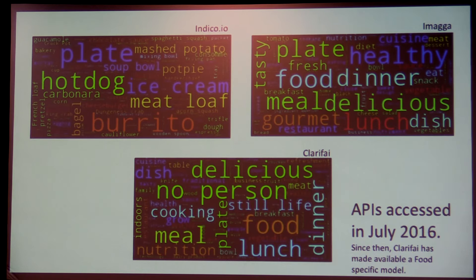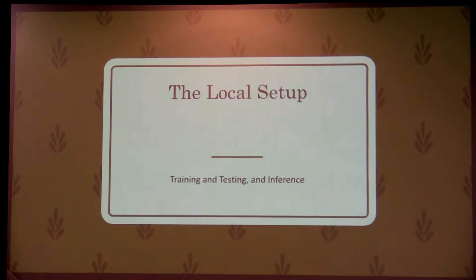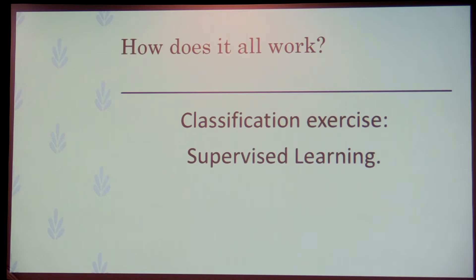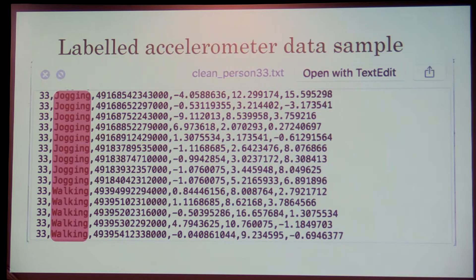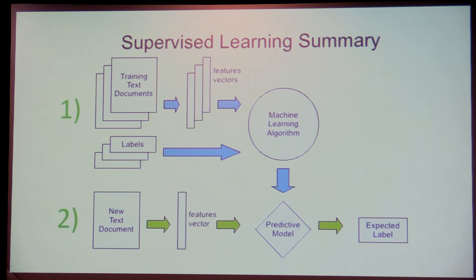So that was the APIs — now this is the local setup. The local setup is basically a classification exercise; it's supervised learning. We've seen this in the last three talks. The idea is: push your training data and labels, get a predictive model, evaluate it, and then do your inference.